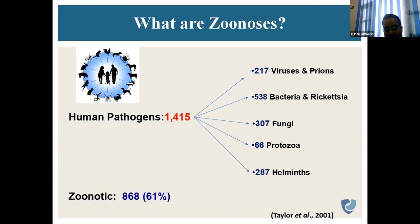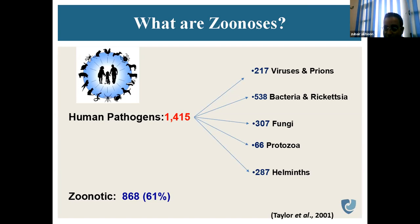Of all human pathogens — 1415 in total — 868 of these diseases are caused to humans due to animals. That means they are zoonotic in nature.